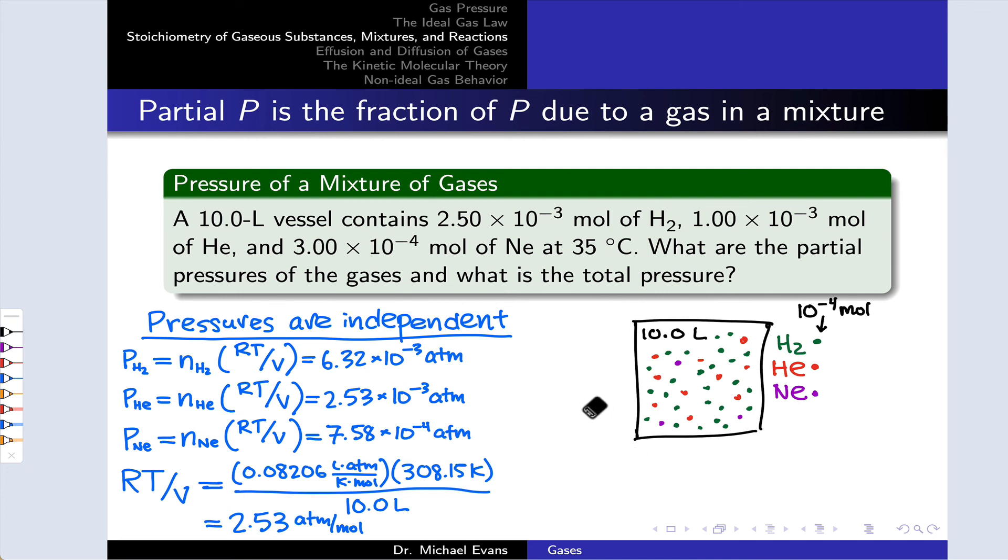To find the total pressure from these partial pressures, we can simply add up the three partial pressures. This is mathematically equivalent to adding up the number of moles initially, and then using that total number of moles times R times T divided by V to find the total pressure. Regardless of how you calculate it, you get 9.61 × 10^-3 atmospheres.